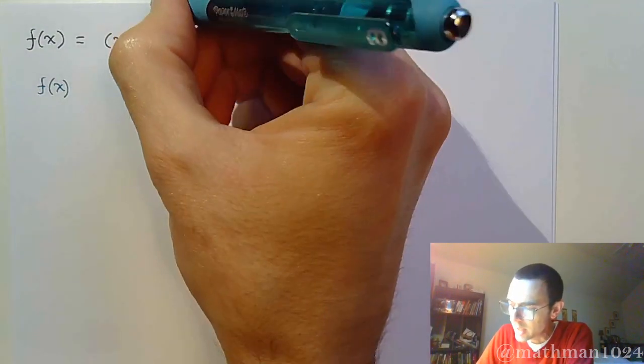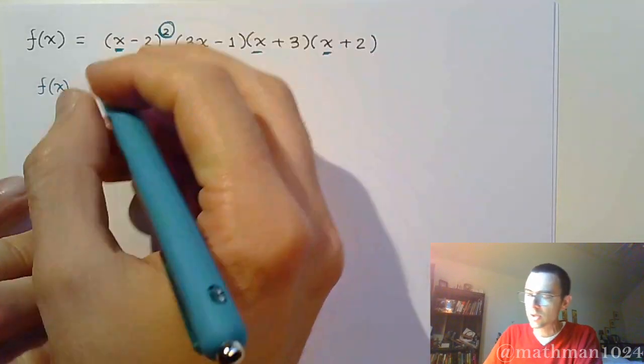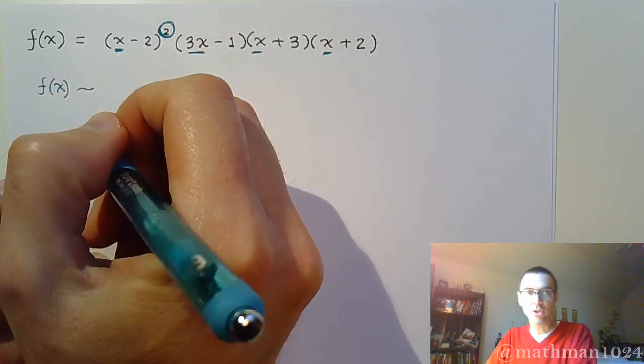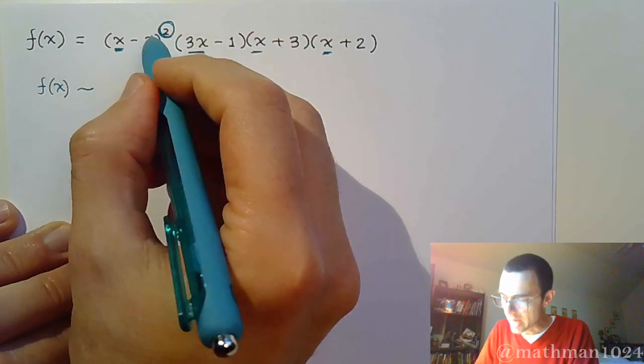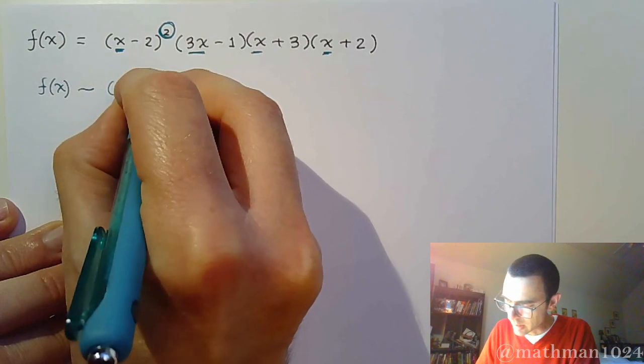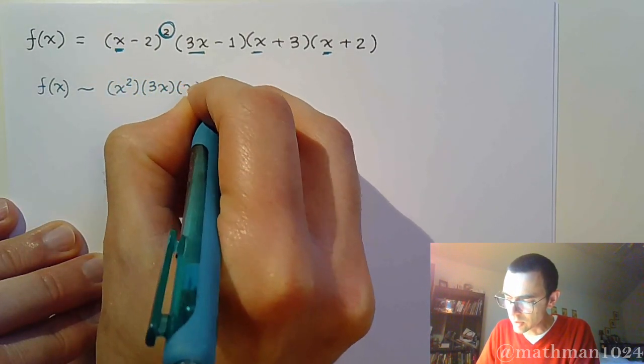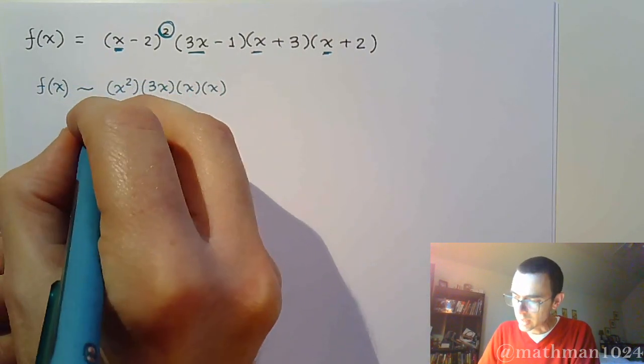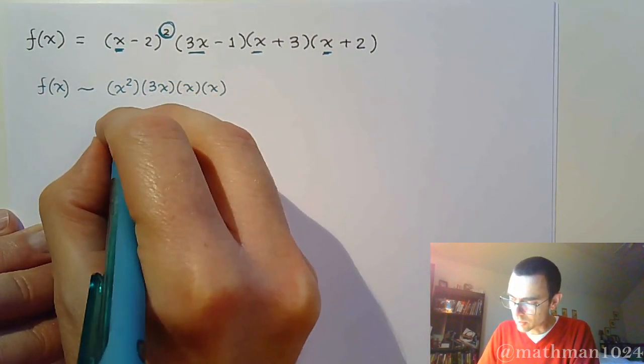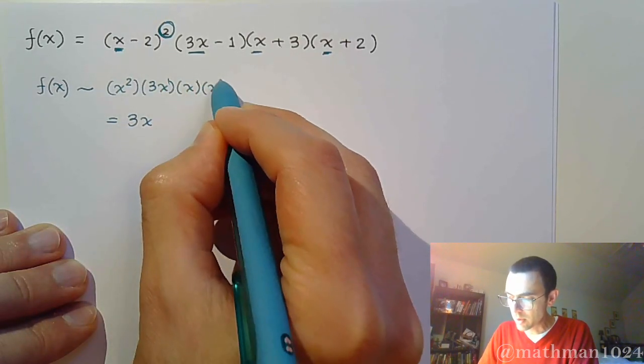One of the things you also want to identify is that you've got a square right here. So f(x), in terms of what that first term is going to look like, is going to have this x squared times 3x times these other two factors of x. So altogether, it's going to look like 3x to the 2, 3, 4, 5.